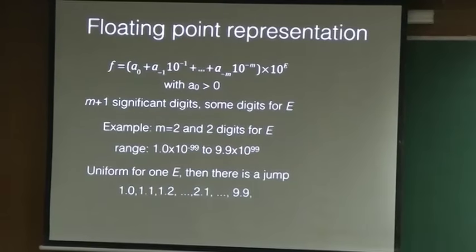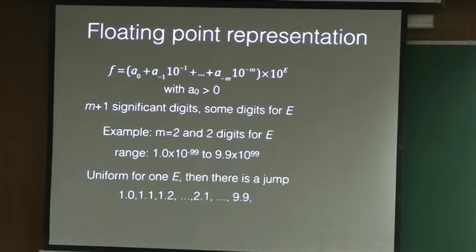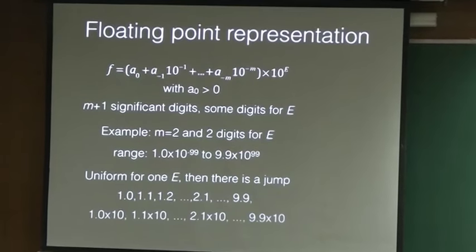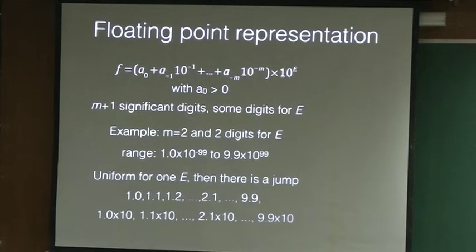I like this idea. This part: here the exponent e is 1, so spacing is 0.1 clearly. When you go to e equal to 1, that means I am multiplying by 10. So I have 1.0 times 10, that is 10, 11, 12. The spacing has become 1. My spacing is not uniform in floating point representation, but my range has increased.